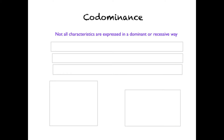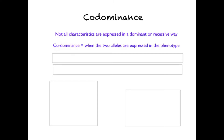Sometimes two alleles can both be expressed in the phenotype, and we refer to this as co-dominance. Neither of the alleles is dominant over the other. When the individual is heterozygous for this particular trait, they actually show both of the characteristics.